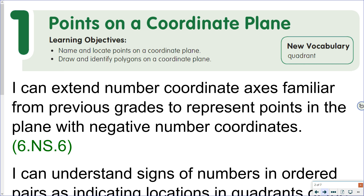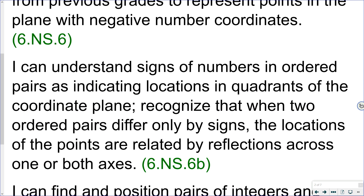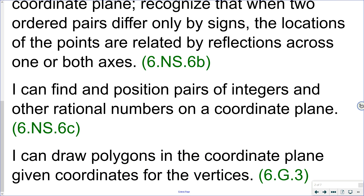On the coordinate plane we have multiple standards we will be utilizing. 6NS6 talks about points in the plane with negative number coordinates. 6NS6B covers reflections and how signs indicate order. 6NSC covers finding position pairs of integers and other rational numbers on the coordinate plane. And 6G3, a geometry standard, covers drawing polygons in the coordinate plane, which will be in our next lesson.